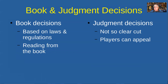There are two types of decisions a director can make. Book decisions are based on the laws and regulations — in principle you can simply read out your decision from the book, and players are entitled to ask you to read directly from it for absolute clarity. The other type are judgment decisions, which won't be part of this course. These are less clear-cut; players can appeal, and even at national level some decisions are overturned by appeals panels.